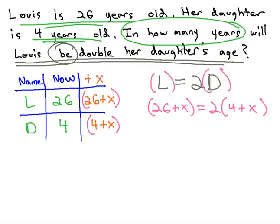We now have an equation we can quickly solve. We can start solving by distributing through the parentheses to get 26 plus x equals 8 plus 2x.